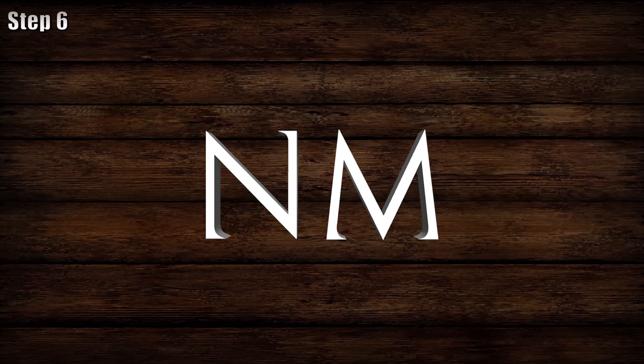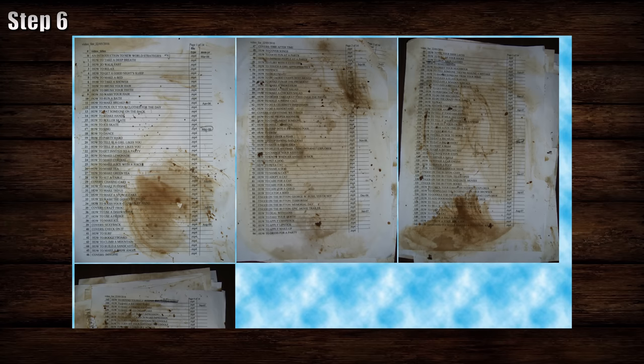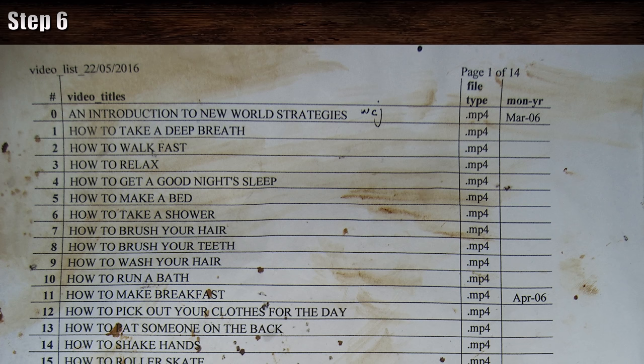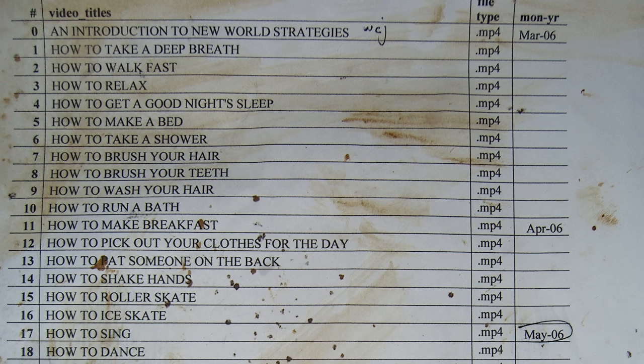It's time for step six: let the viewers see that list. That is a lot of pages and they're filthy. Top of the first page says "video list," then gives a compilation date of May 22, 2016. Is that when the list was compiled? On the top right: 14 pages of topics — we only have up to 11 of them. There are dates in the right column which appear to mark the videos that were actually made. You can spot one we've seen — "How to Not Care" — on page four, from March of 2008. This all started in March of 2006, and for some reason the May 2006 entry is circled. In fact, throughout the list, items in the month of May are circled — like all of them.